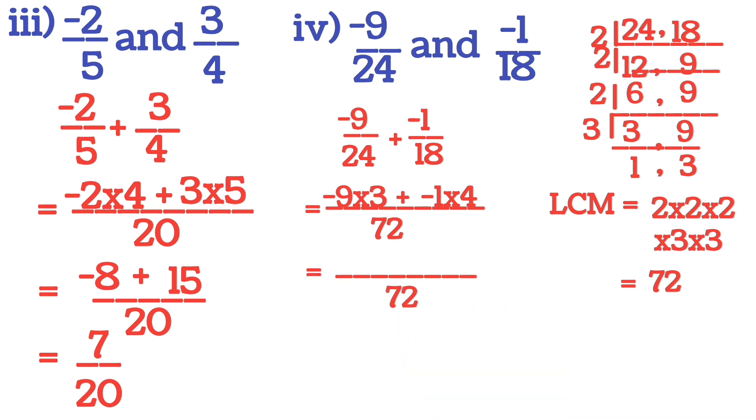Write 72 here. Then 9 3s are 27 and 9 is minus, so minus 27 plus 4 1s are 4, so minus 4. Keep it inside the bracket. Now next step is write 72. Then minus 27 plus minus minus 4. Both are minus, so you will do addition. Minus sign is with 27 bigger number. So our answer will be minus 31 by 72.